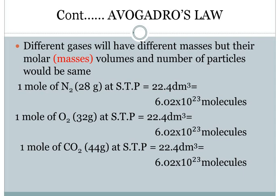Coming to the new lecture — if you remember, previously we have done the gas laws in which we studied Charles' law, Boyle's law, Gay-Lussac's law, and Avogadro's law. Then we combined all these laws and derived the ideal gas equation PV = nRT. From this equation we further derived two new equations: one for calculating molar mass and one for calculating density.